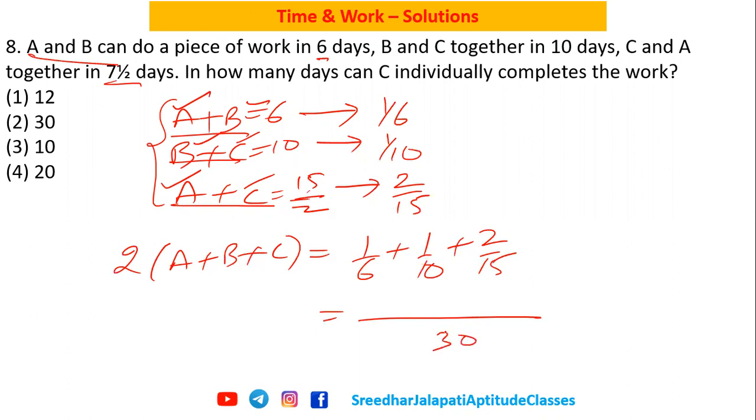Now LCM of all these is 30. Six goes five times, ten goes three times, fifteen goes two times, and two into two is four. Because we already have two in the numerator, it's going to be 12/30 which is 2/5. What is this 2/5? Two times ABC is one day work.